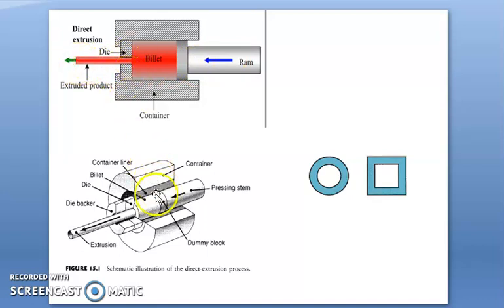If you see in the cross sectional figure, this is pressing ram. Here we have the additional dummy block. In front of that we have the billet, and the container surrounding the billet. The dies are connected to this container, and for supporting dies, we have the die backer.